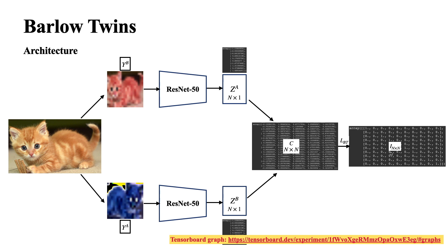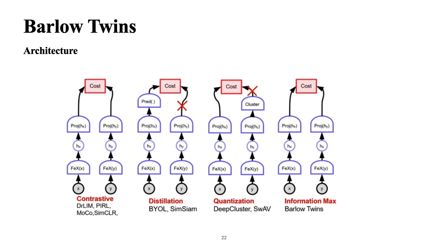Before the results, here is an overview comparing methods. The contrastive learning method reduces energy for similar images and increases it for dissimilar ones, but depends on batch size. The distillation method — as seen in the BYOL lecture — does not back-propagate through one channel, acting like a teacher-student setup. Deep clustering is similar to distillation but clusters instead of predicting. Finally, Barlow Twins extracts maximum information via the cross-correlation objective.